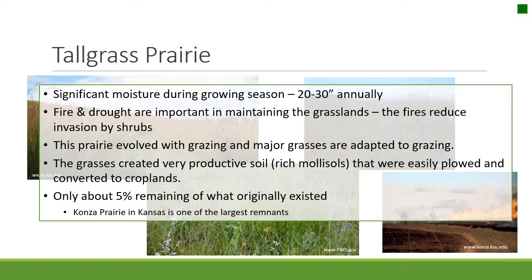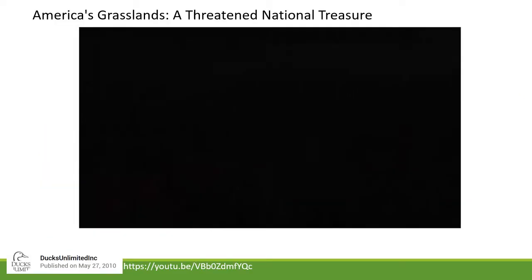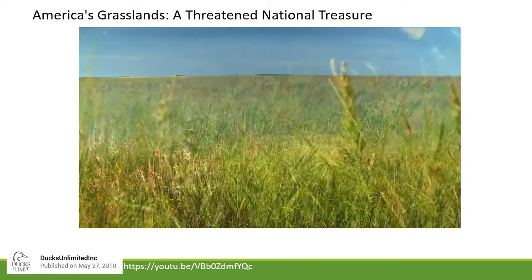The Konza Prairie in Kansas is one of the largest remnants, in case you ever get a chance to visit. Some major plants from the tall grass prairie: big bluestem is the one we will look at in this class, but Indiangrass is also another dominant plant of the tall grass prairie, as is switchgrass. Prairie coneflower is something seen throughout the prairie — a lot of beautiful wildflowers — and it would be really common. Some animals you might see in the tall grass prairie include red fox as one of the mesocarnivores in that system, and bison historically and today, with cattle grazing what prairies exist.